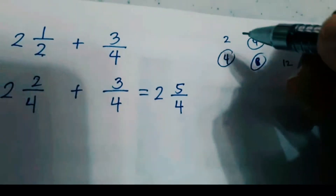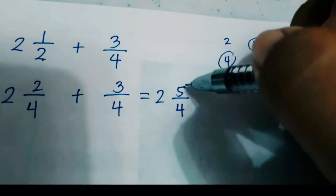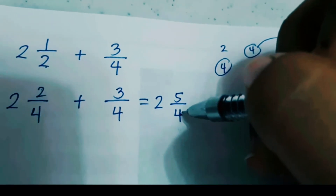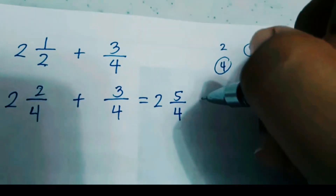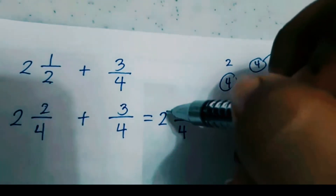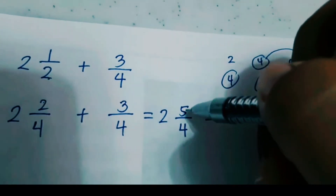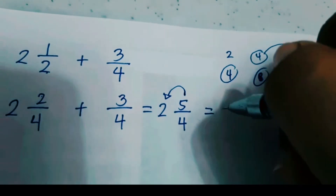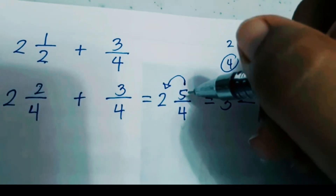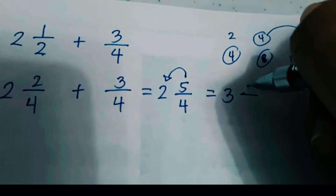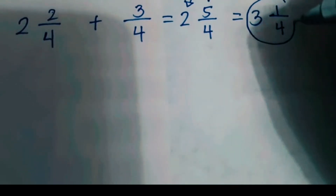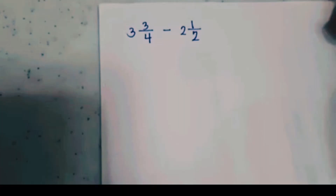You now have 2 and 5/4. Since the numerator 5 is greater than the denominator 4, you need to regroup. How many 4s can you get from 5? Only one. Since you already have the whole number 2, add the 1 to it: 2 plus 1 equals 3. What remains after taking 4 from 5 is 1, so 1 is your numerator. Copy the denominator. Your final answer is 3 and 1/4.